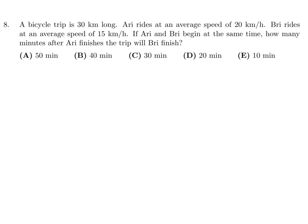A bicycle trip is 30 kilometers long. Ari rides at an average speed of 20 km/h, Bri rides at an average speed of 15 km/h. If Ari and Bri begin at the same time, how many minutes after Ari finishes the trip will Bri finish? Speed equals distance over time, or time equals distance over speed. The distance is 30 km for both. Speed for Ari is 20 km/h, speed for Bri is 15 km/h.